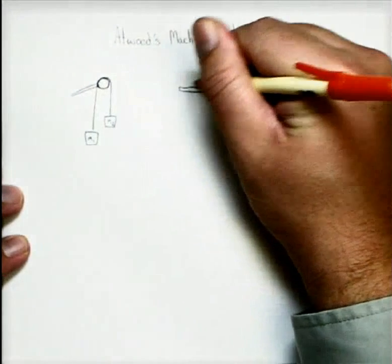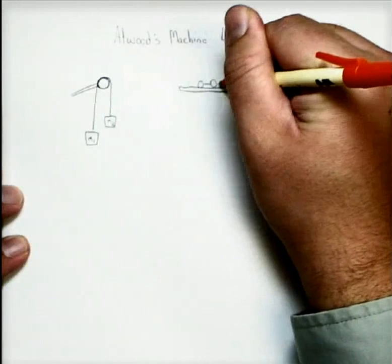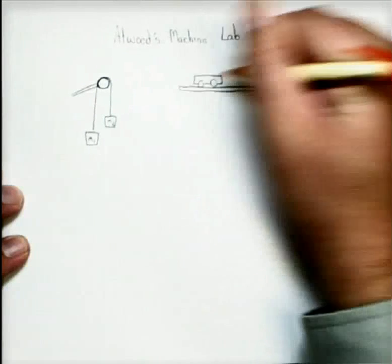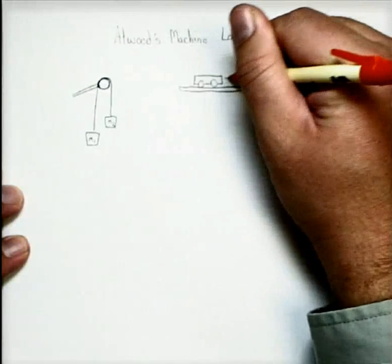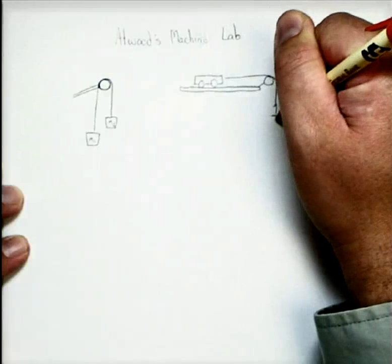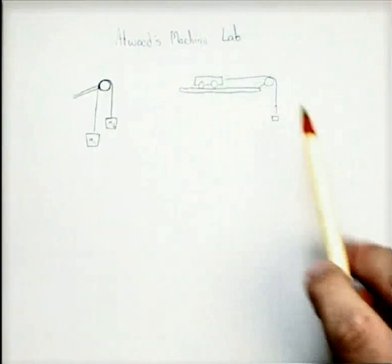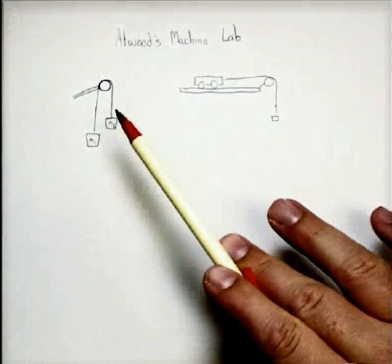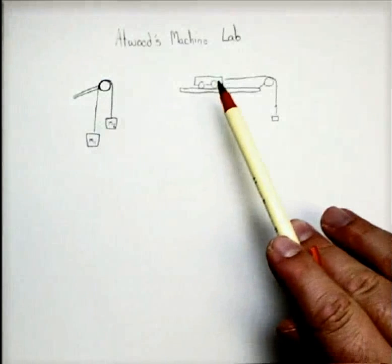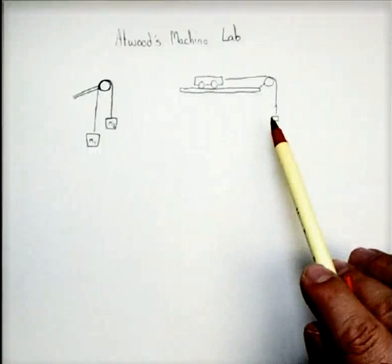The modification that we used is instead of another hanging mass on one side, we had a cart hanging on one side. So notice these are pretty much the same except instead of this mass, now we have a cart attached to the pulley and the mass.